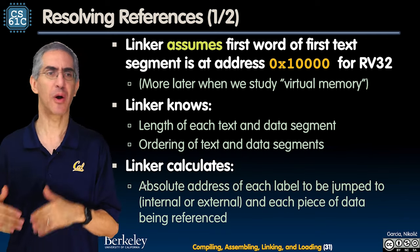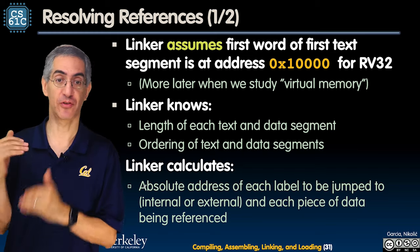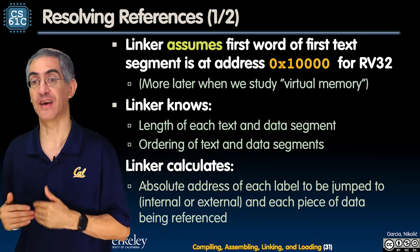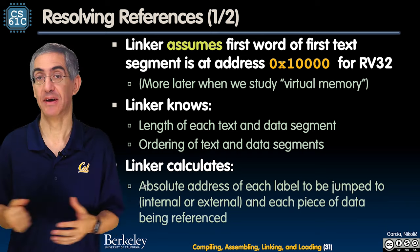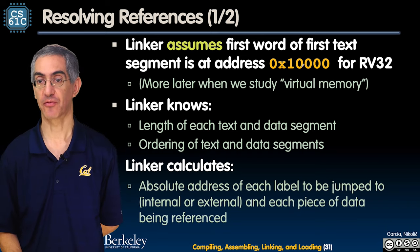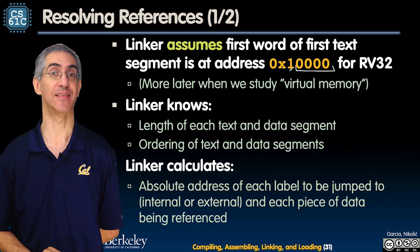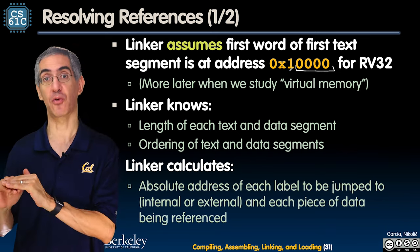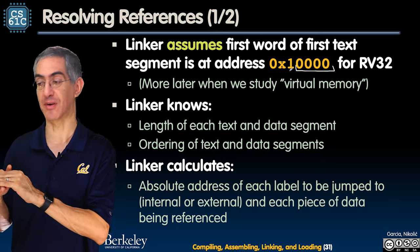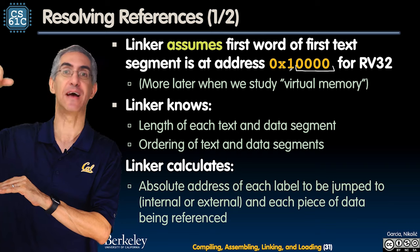Does the code start at zero? The linker assumes the first word of the first text segment starts at 0x10000 in hex, which is 64K. Each hex digit is four bits, so 0x10000 is 2 to the 16th, which is 64K. So the first text segment begins at the 64K address, followed by text one, text two, text three, then data one, data two, data three.